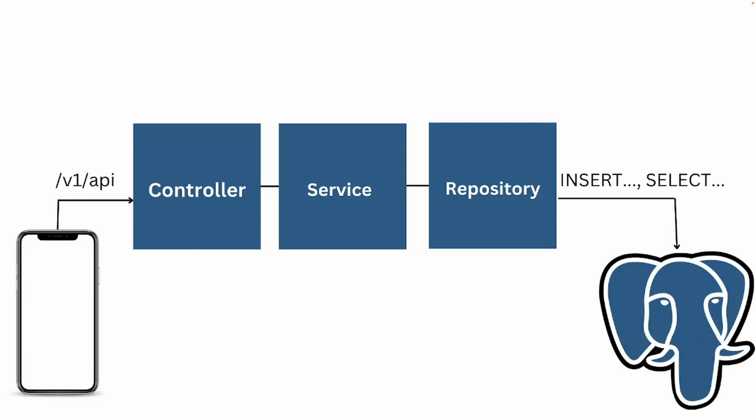For example, just like google.com/maps, in our case we'll have an endpoint called /v1/api. We send a request to that endpoint, and the controller receives it and does something based on that. It's the entry point of our API — if they want to get to-dos, we send those back; if they want to post a to-do or delete a to-do, we handle that.